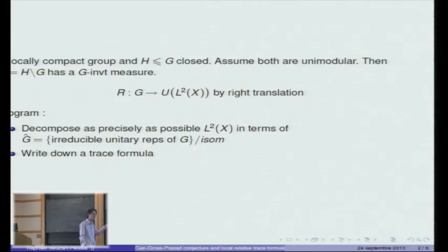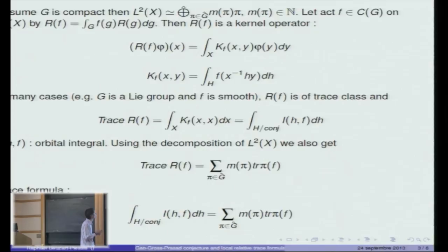I denote by G-hat this set of representations taken up to isomorphisms. It's called the unitary dual of G. Try to write down for such a representation a trace formula. Let me first give an example when G is compact. In this case you have a discrete decomposition of L2 of X in terms of irreducible representation of G. You have a Hilbert direct sum indexed by pi in the unitary dual of G of M pi copies of pi, where M pi is a non-negative integer.